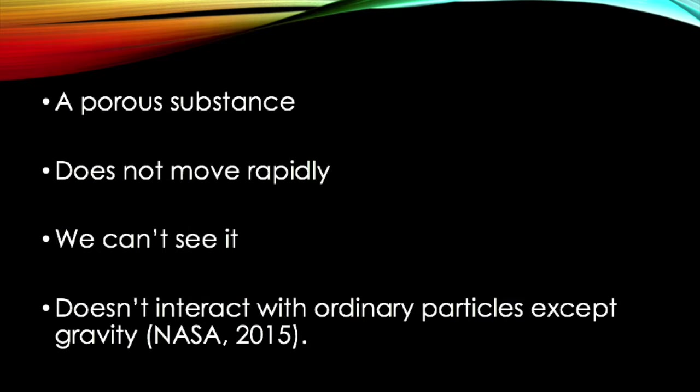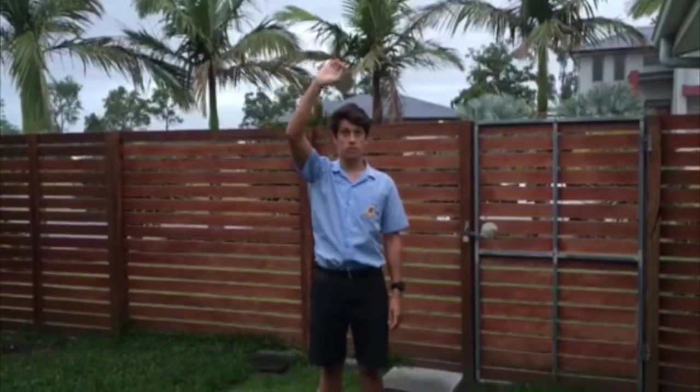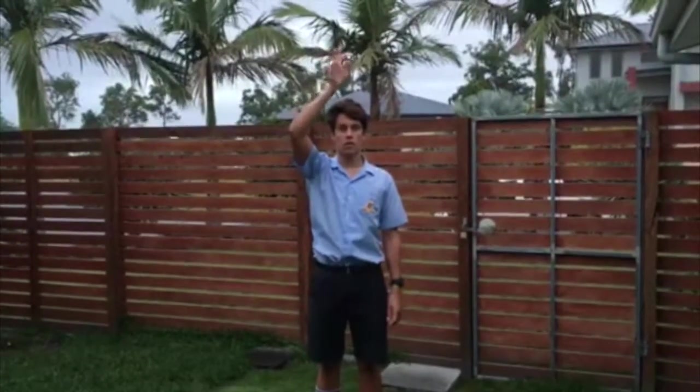Here's what we do know. It's a porous substance. It does not move rapidly. We can't see it and it does not interact with ordinary particles except through gravity. In simpler terms, imagine the orbiting light above me was due to gravity. Now I am invisible, yet you know there's a gravitational force counteracting the light to fly off in a straight line. That invisible force is also known as dark matter. We can see its effects and without it, our galaxies would not be formed the way they are today. This analogy applies to how scientists know dark matter exists.